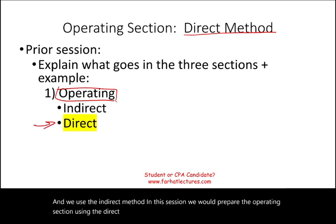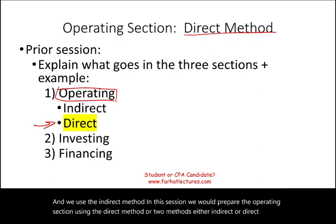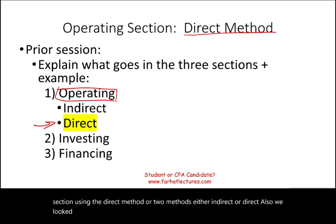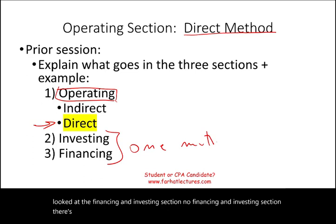In the prior session, we looked at what goes into each section of the statement of cash flows. We worked an example and looked at the operating section using the indirect method. We also looked at the financing and investing sections, which only have one method.